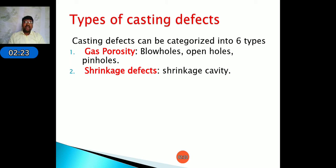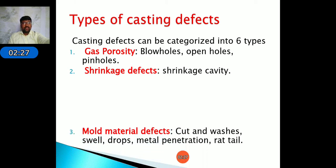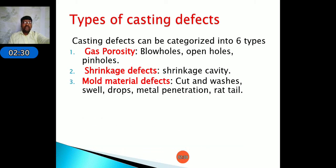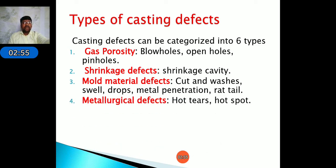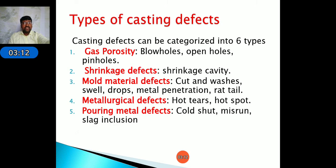The second category is shrinkage defects, which mainly occur during the solidification process and primarily in non-ferrous materials. Third is mold material defects, based on the molding material — mainly molding sand — affected by sand preparation, the ramming process, and permeability. Fourth is metallurgical defects, based on the type of metal and melting process, including hot tears and hot spots.